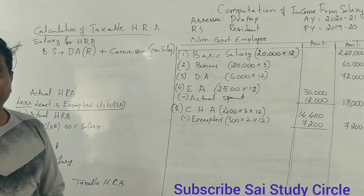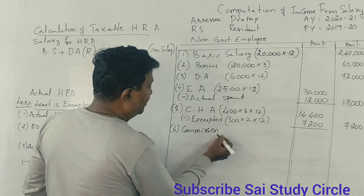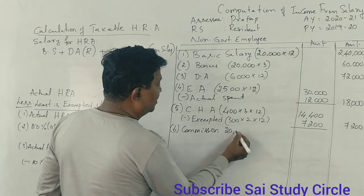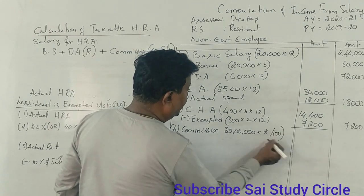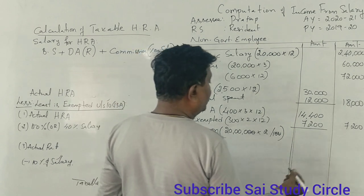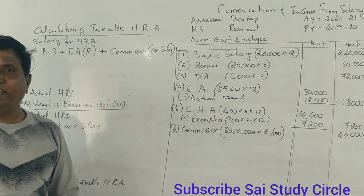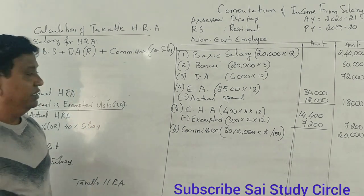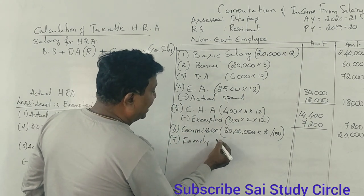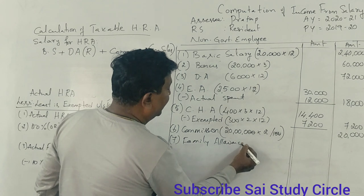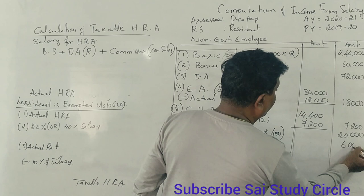Next point: Commission. It is calculated on turnover and sales — 2% on Rs. 20,00,000. Family allowance is fully taxable: Rs. 500 per month, and for 12 months it comes to Rs. 6,000.